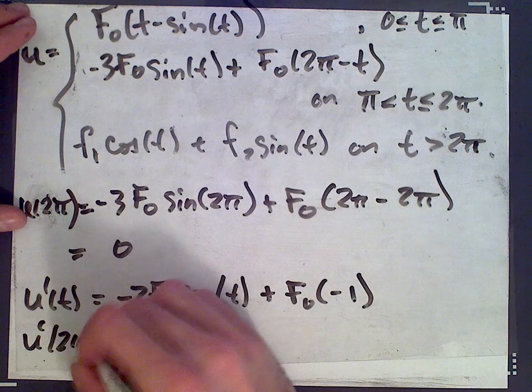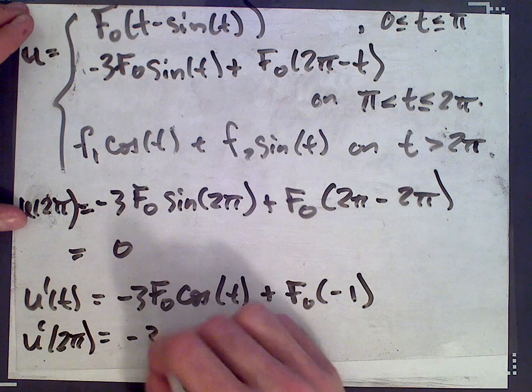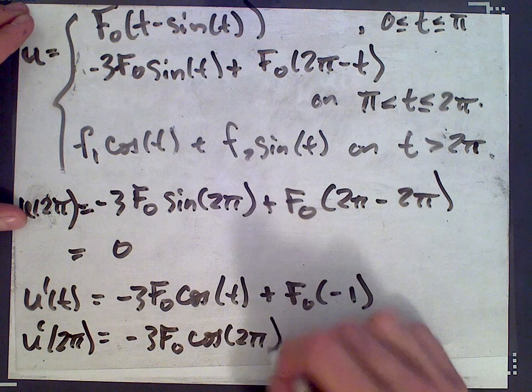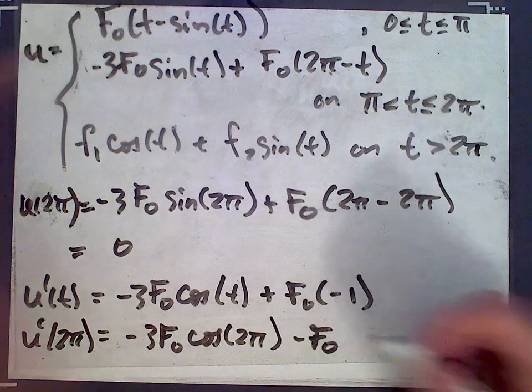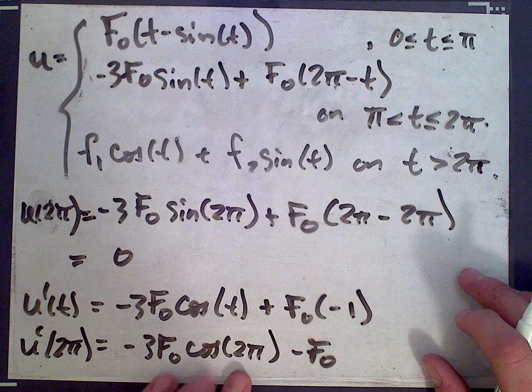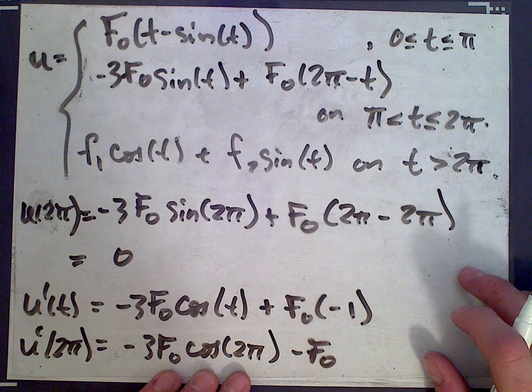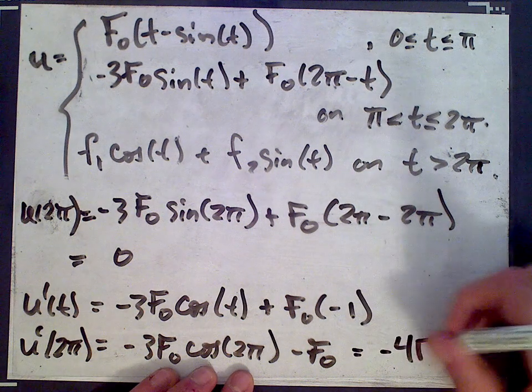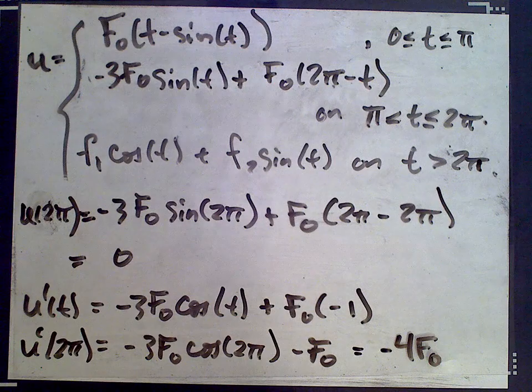u prime at 2π is negative 3 f0 cos of 2π minus f0. Cos of 2π is 1, so what we get is negative 4 f0 there.